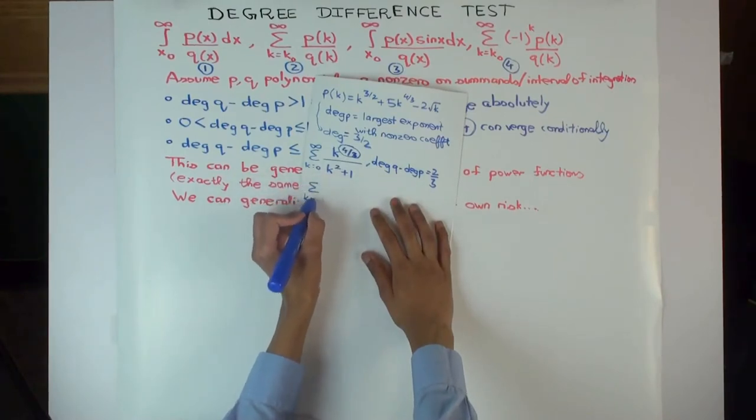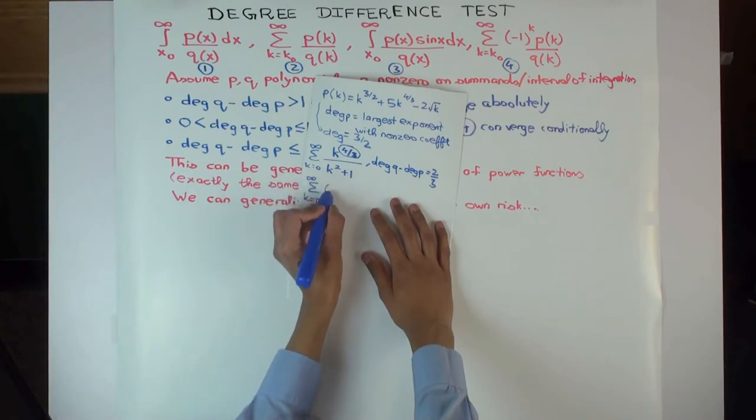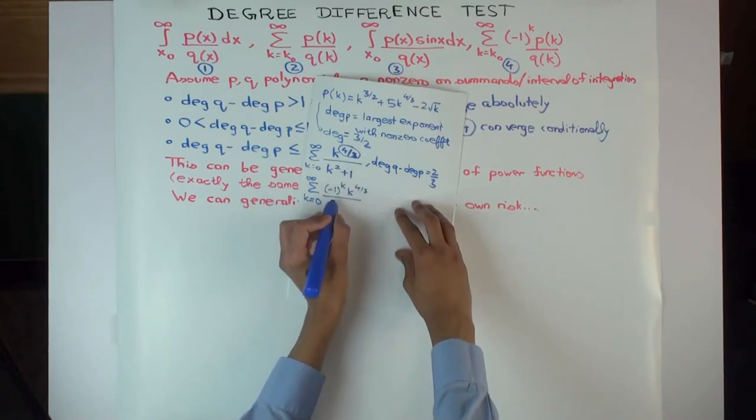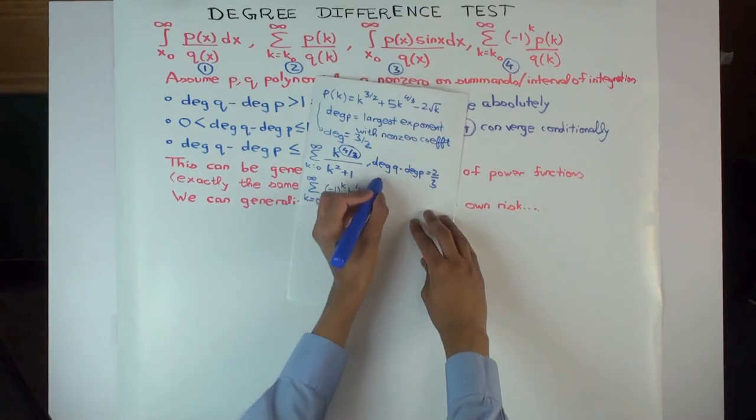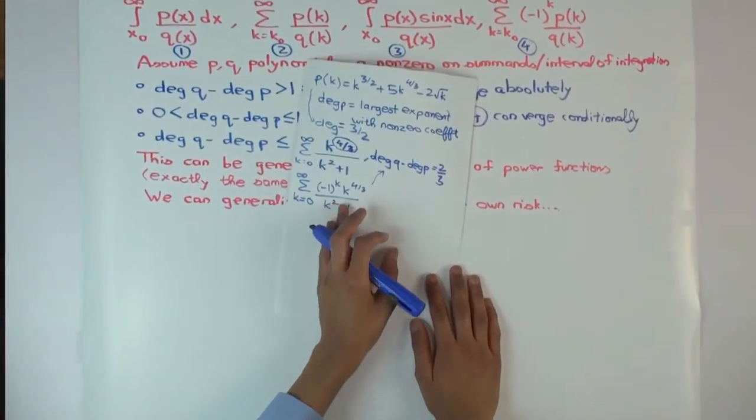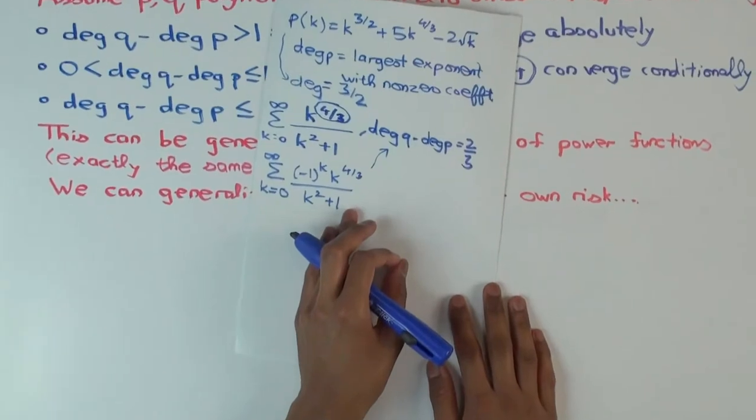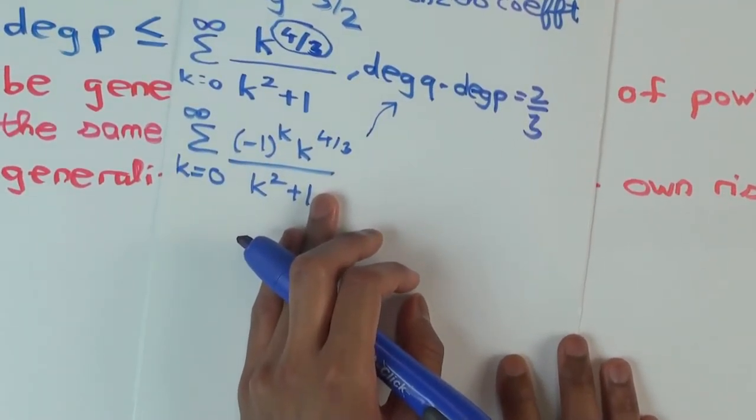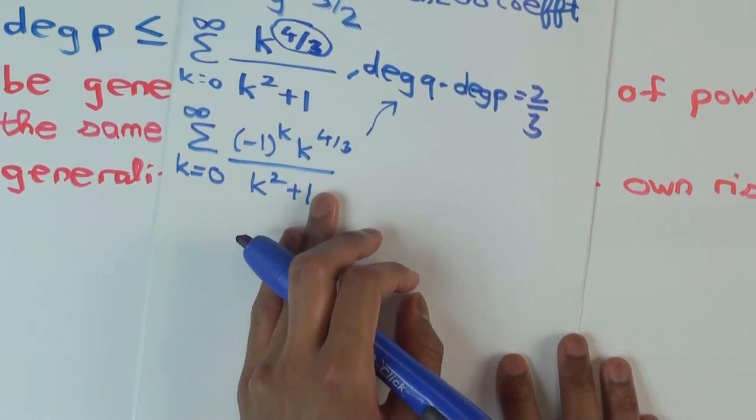Suppose I gave you just the same thing but with a sign here. Then, you have the same thing here but now what would be your conclusion? It converges conditionally. It converges, yes. It converges. And if you want to be more specific, you can say it converges conditionally.